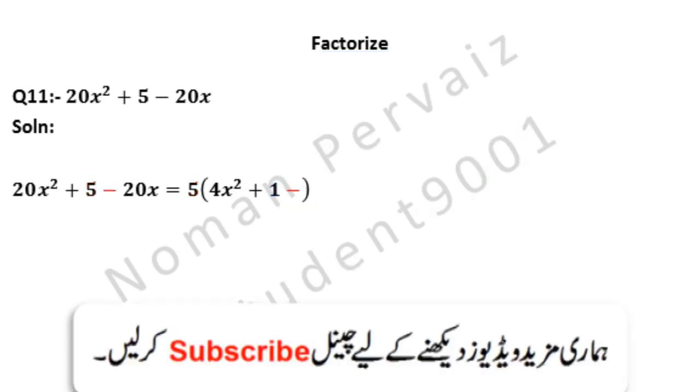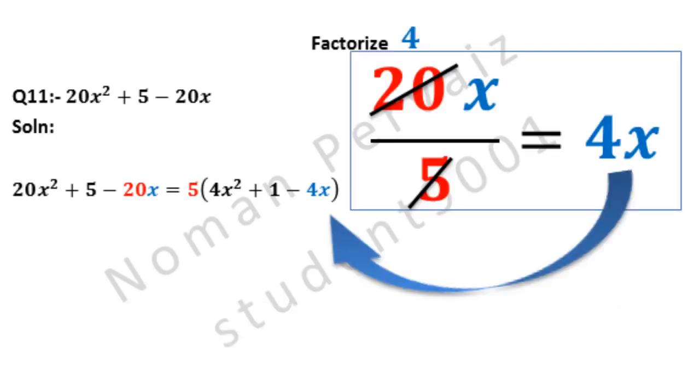Minus comes as it is. 5 divides 20, 4 times, so 4 is written and x is written as it is. Since 5 is common, we divide 20x by 5. 5 fours are 20, hence 4x is left.